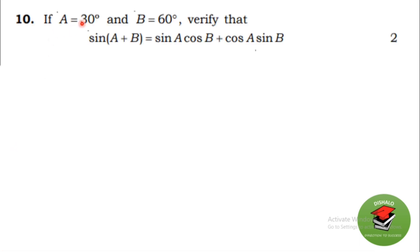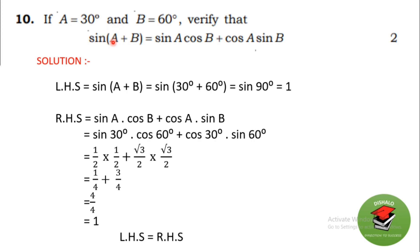If A = 30° and B = 60°, verify that sin(A + B) = sinA cosB + cosA sinB. LHS: sin(30° + 60°) = sin90° = 1. RHS: sin30°·cos60° + cos30°·sin60° = (1/2)(1/2) + (√3/2)(√3/2) = 1/4 + 3/4 = 4/4 = 1. LHS = RHS, hence verified.